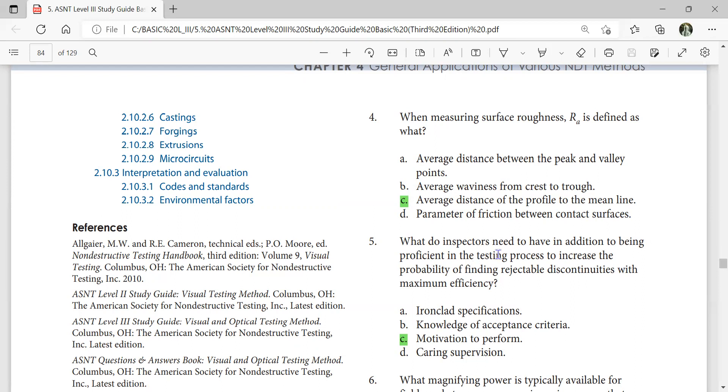What do inspectors need to have in addition to being proficient in the testing process to increase the probability of finding rejectable discontinuities with maximum efficiency? Motivation to perform.